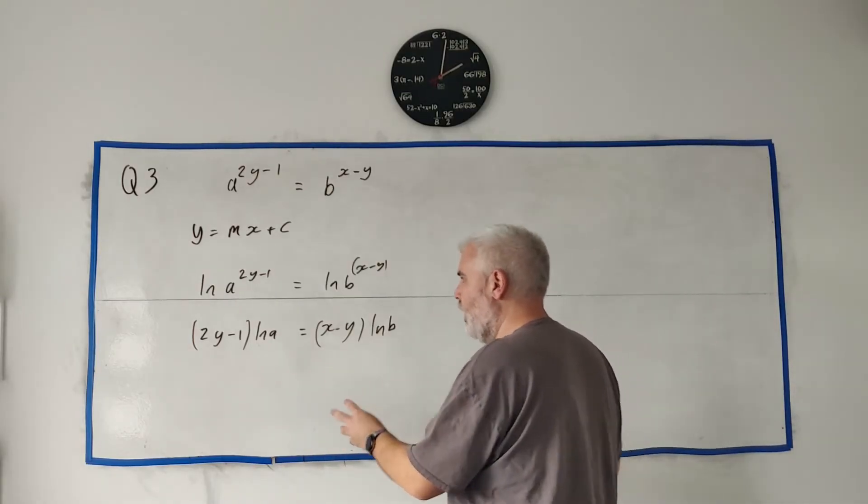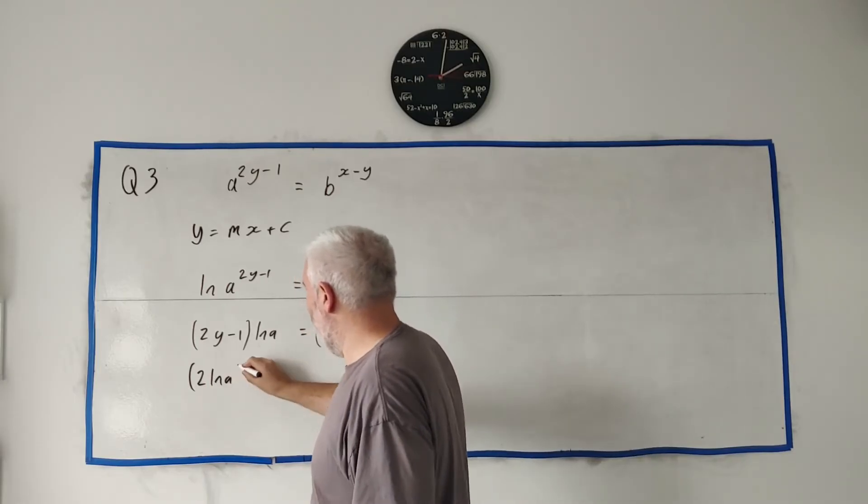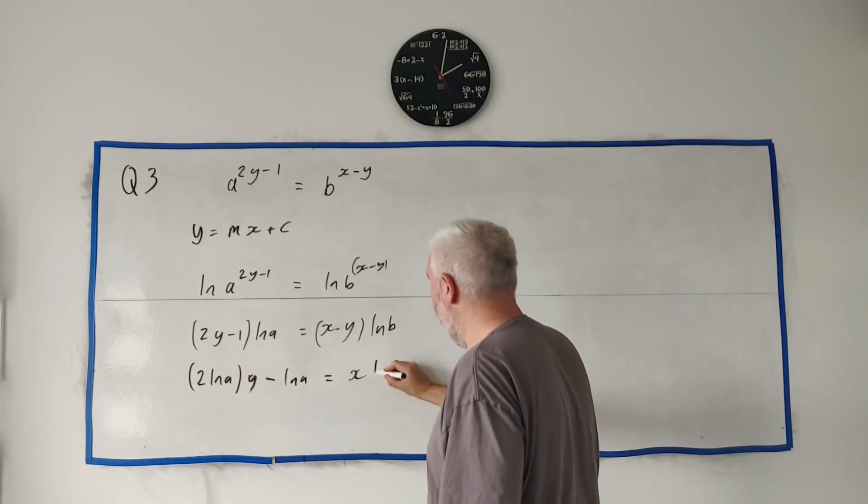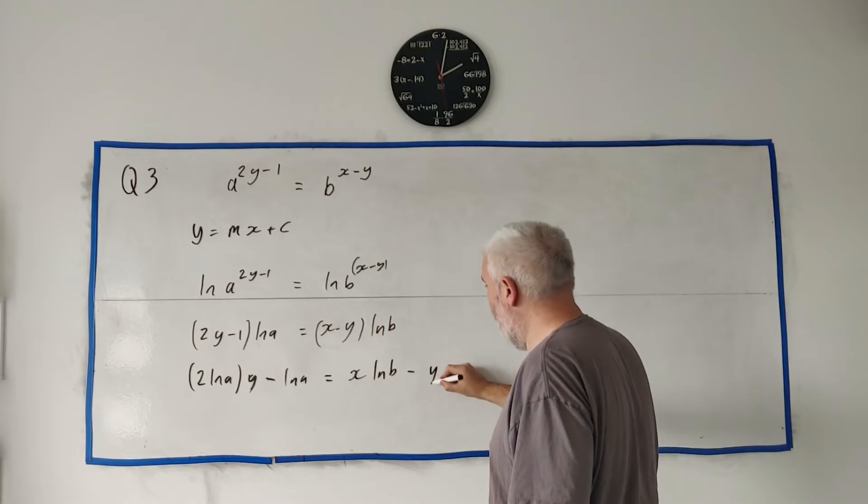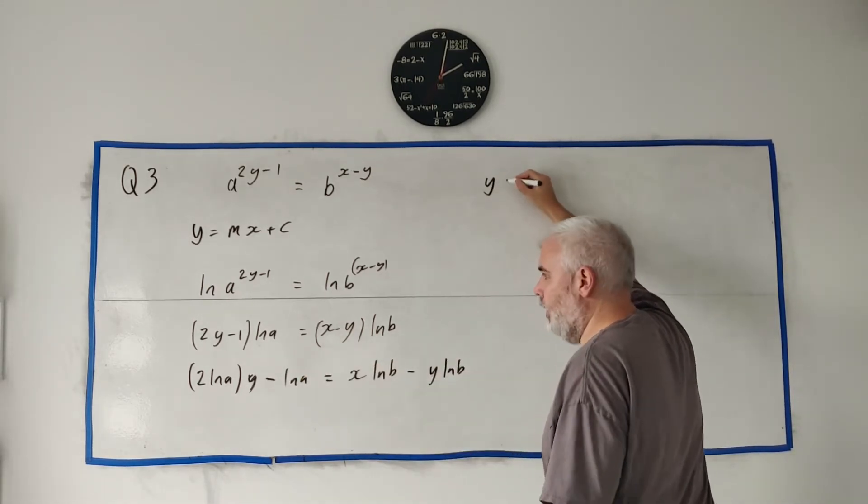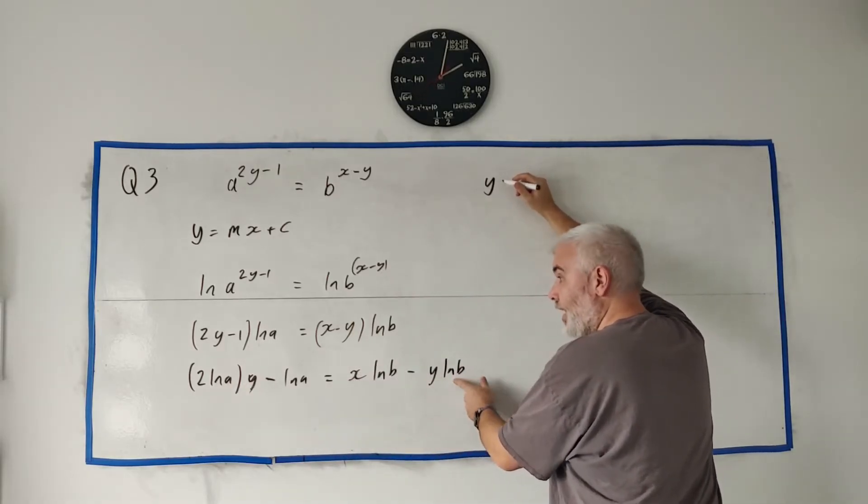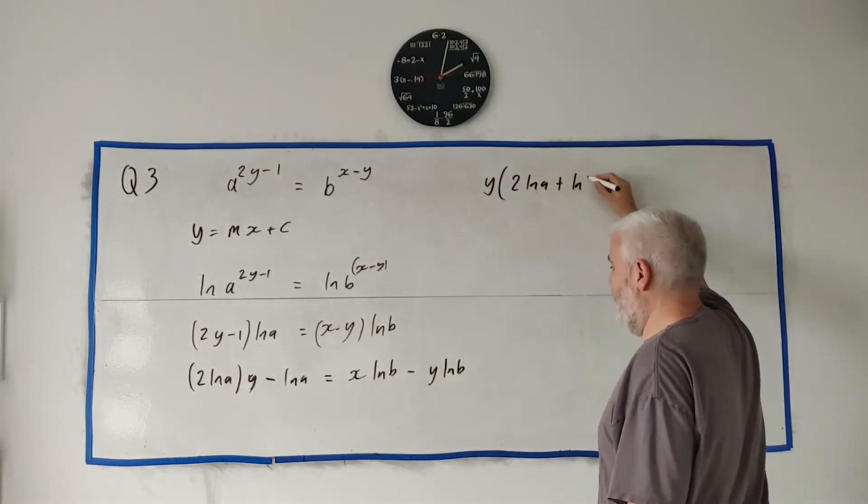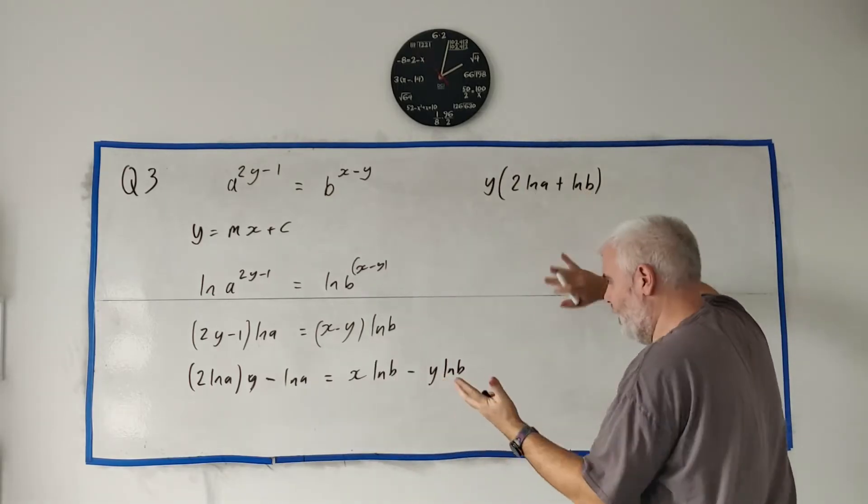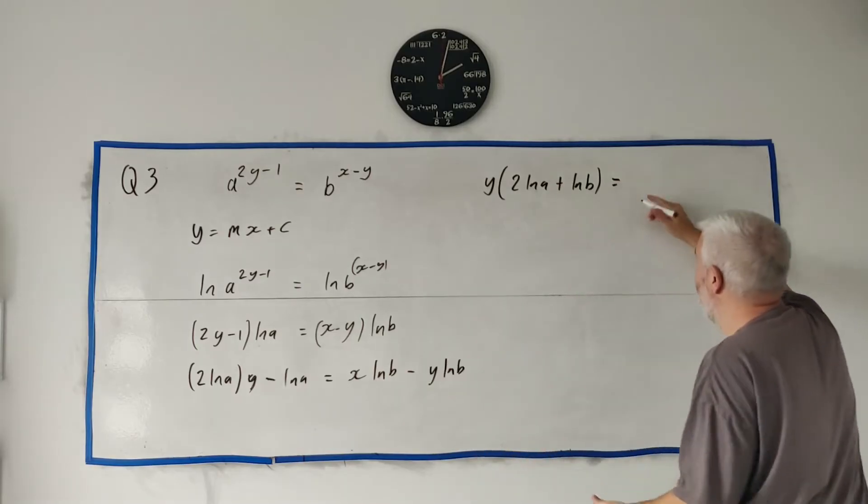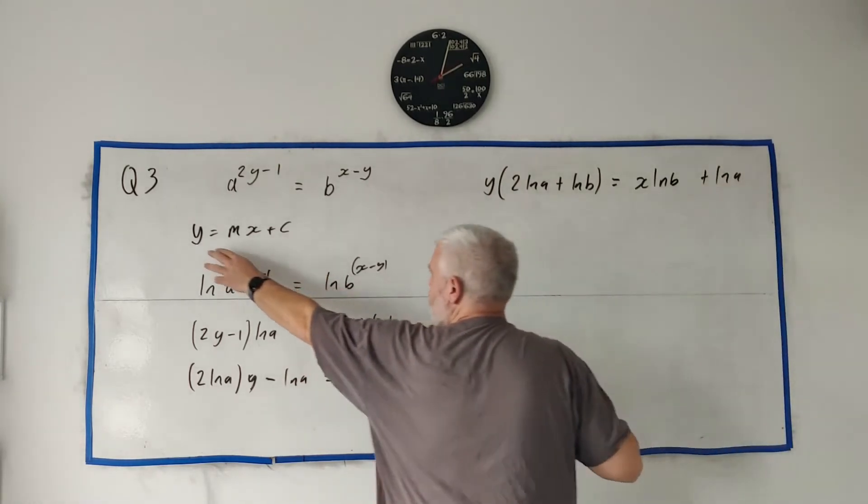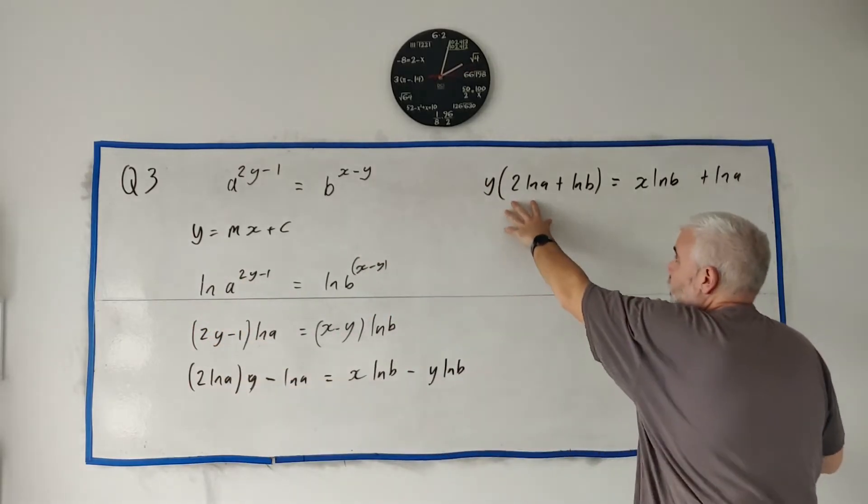If we multiply this all out, we'll just get 2 natural log A multiplied by y. We will get minus natural log A. On this side, we'll get x times natural log B, and we'll get minus y times natural log B. Get all the y's on the same side, all the x's on the other side. So on this side, we'll have y multiplied by this, and then y multiplied by that. So they'll add each other, really. So it'll be 2 natural log A plus natural log B. That's it. If I move this over, they'll both have y in them. I'll have 2 natural log A, and I'll have plus natural log B. So hopefully you're clear what happened there. Similar thing happened over this side. Well, x is x times natural log B, and then plus natural log A. This is already looking a lot like it. y equals x times a constant plus a constant. Just need to divide everything by this.